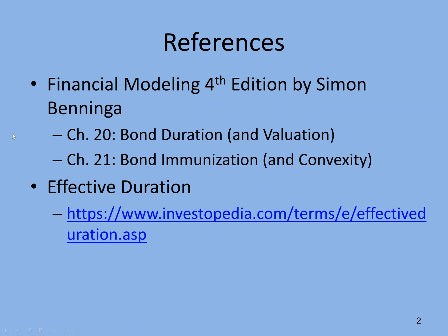Chapter 20 covers bond duration, and Chapter 21 covers bond immunization or hedging. It also brings up the concept of convexity, which will be used in this topic. Not included in the textbook is the concept of effective duration, which is the third duration. We've covered modified duration and Macaulay duration. The last one we'll talk about is effective duration.